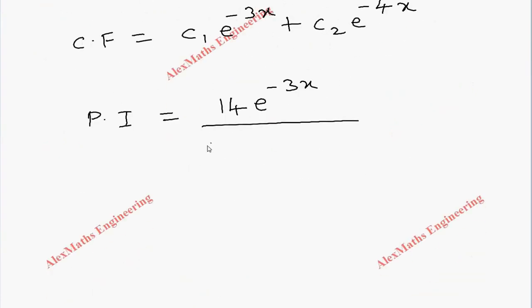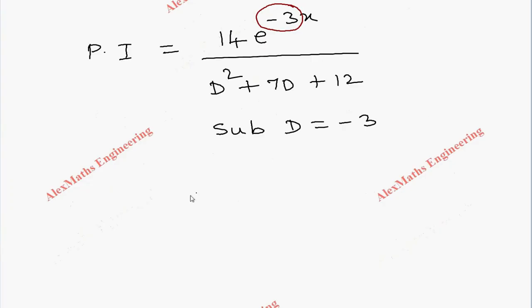Following the procedure, we substitute D = -3 in the denominator. The numerator 14e^(-3x) is written as is, and the denominator becomes (-3)² + 7(-3) + 12.